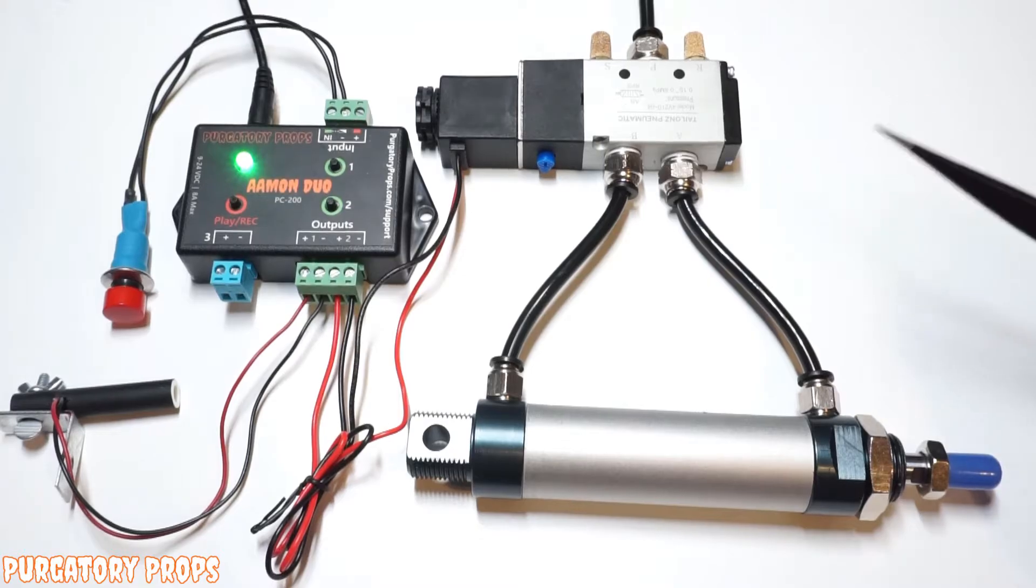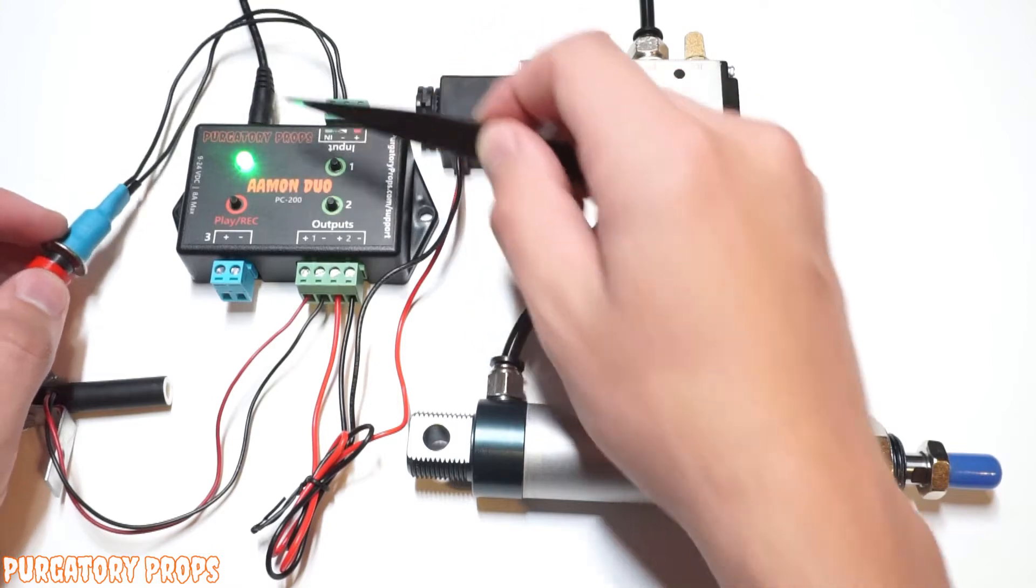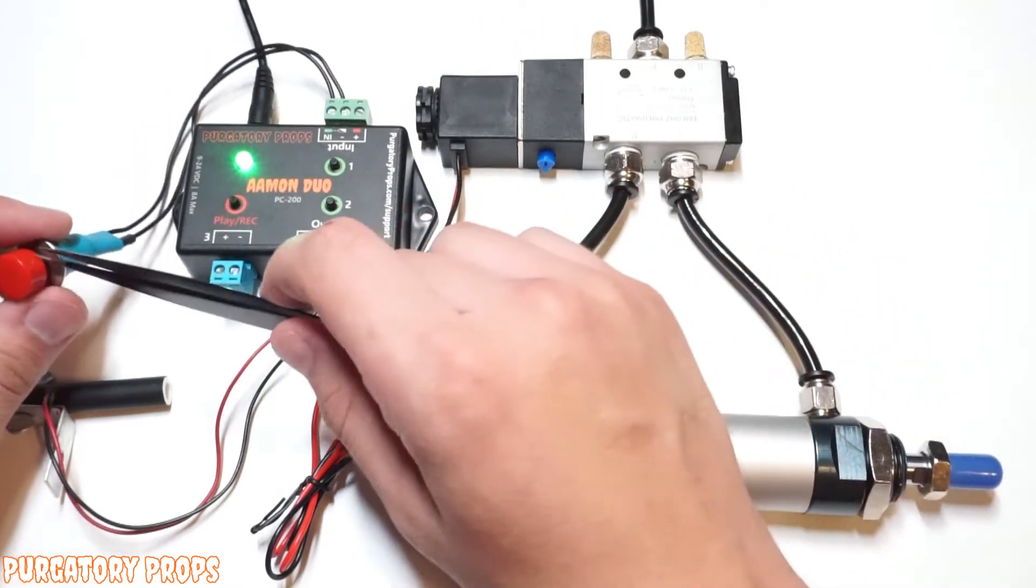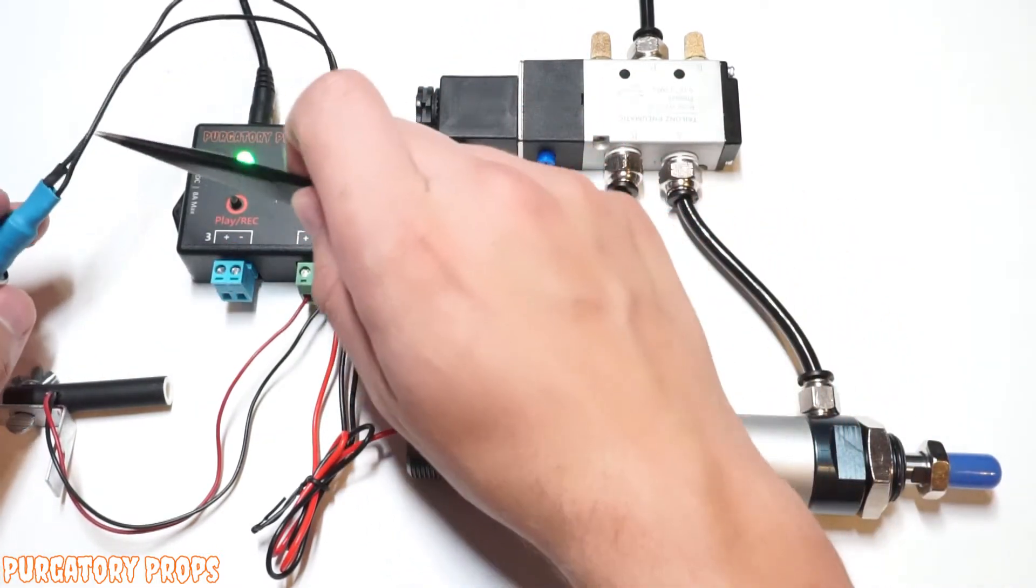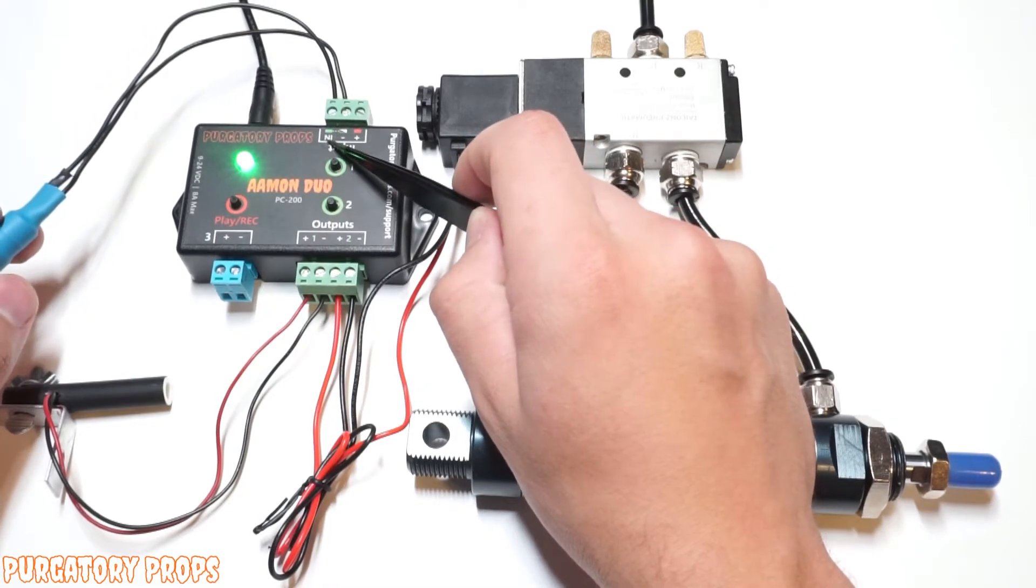So here we have an Amon Duo that's already all pre-wired. We have 12 volts coming in on the DC jack, and then we just have a simple push button trigger. Part of the push button is connected to the negative, and the other part is connected to the IN.